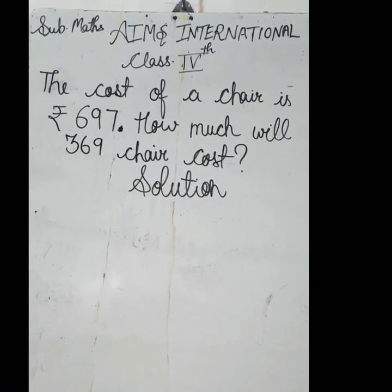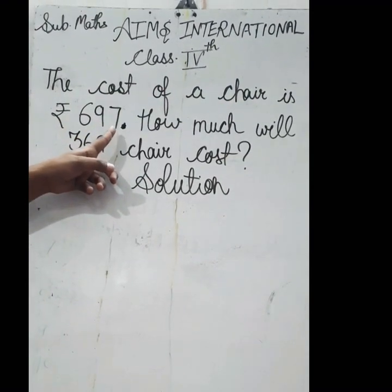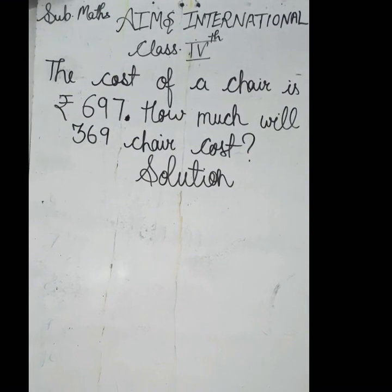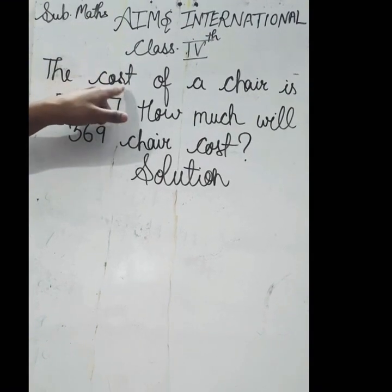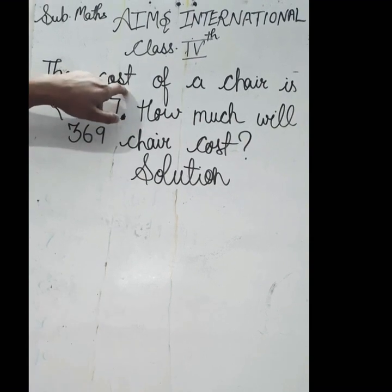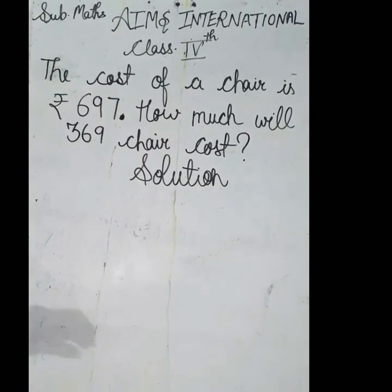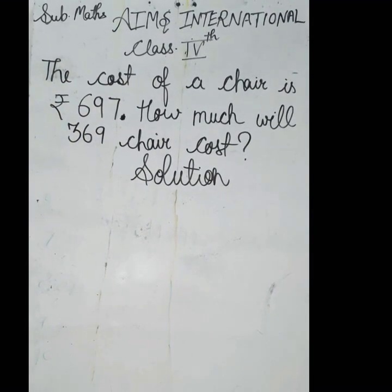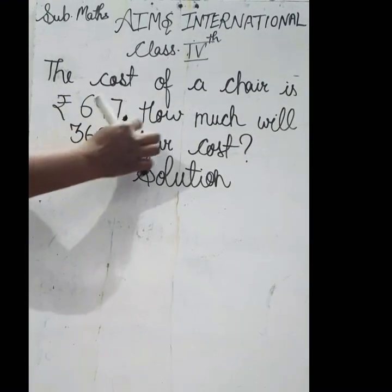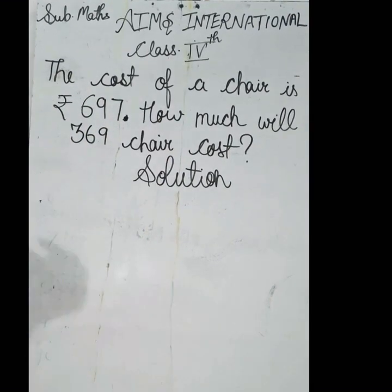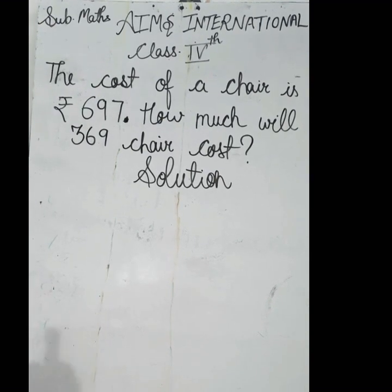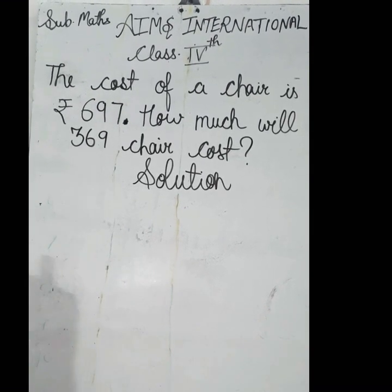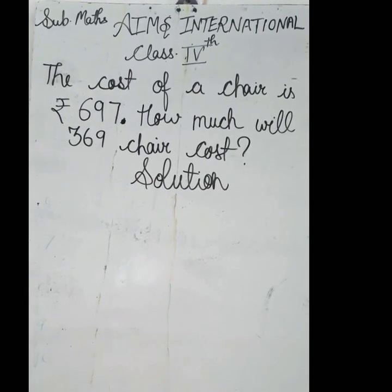Proceeding to my next question: the cost of a chair is Rs. 647. How much will 369 chairs cost? पहले आप इसकी हिंदी समझने की कोशिश करिये। Cost का मतलब होता है price — किसी भी चीज़ को खरीदने से पहले उसका दाम। 'A chair' — यानि एक single chair का price कितना है? 697. यानि एक chair 697 की है। How much will 369 chairs cost? अगर इसी तरह की 369 chairs होंगी, तो उनका cost क्या होगा? एक से ज्यादा की तरफ जाते हैं, तो multiplication।